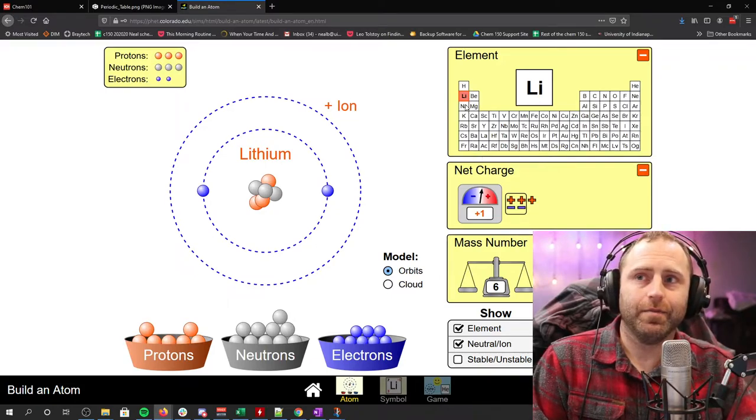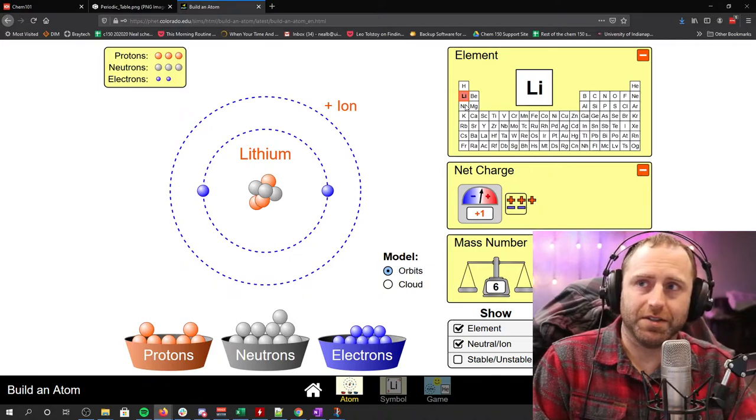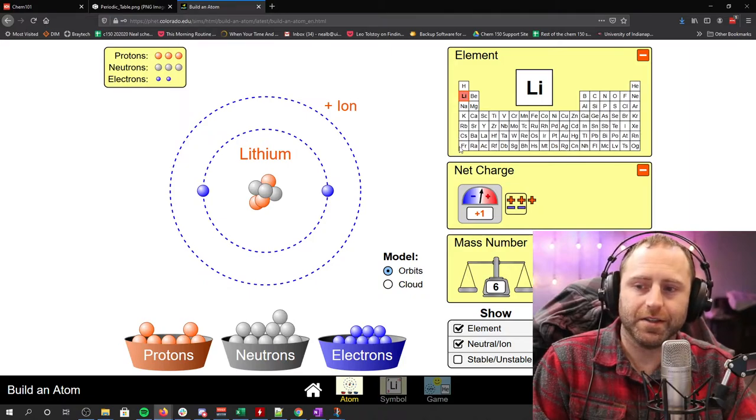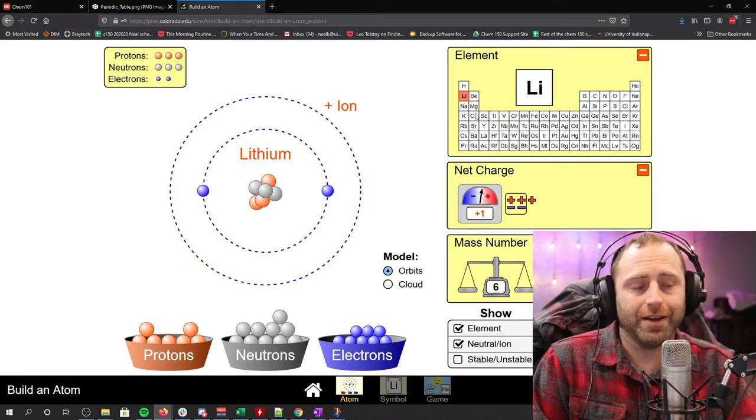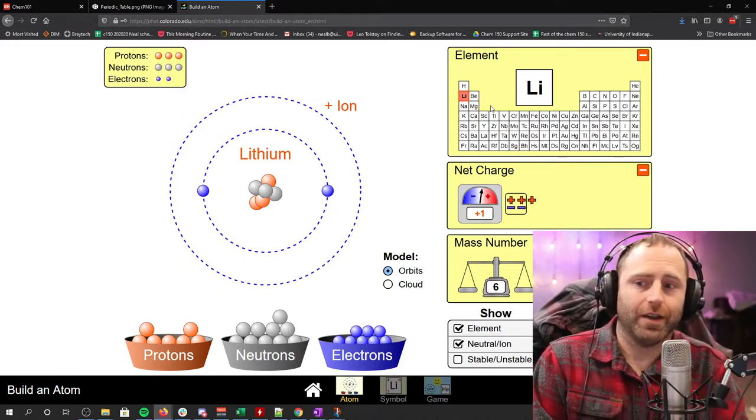We can do that same procedure that we just discussed for sodium, potassium, and all these other elements all the way down. Rubidium, cesium, francium. Because it's easier for them to lose one electron than it is to gain a whole bunch of other electrons.